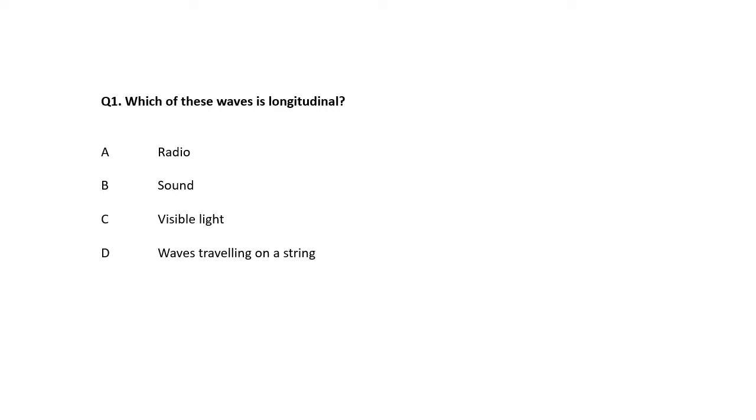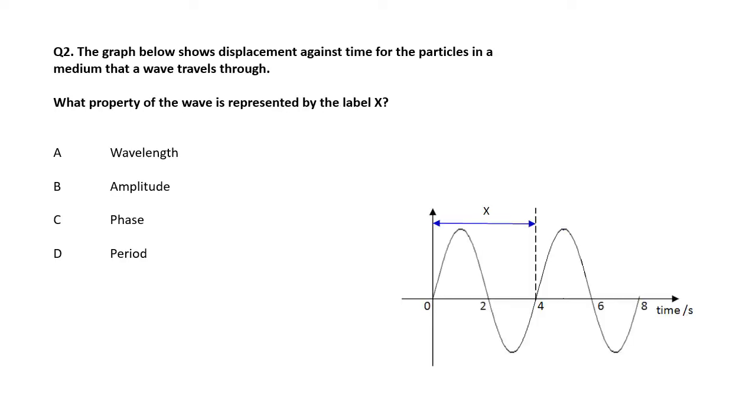Number one, the longitudinal wave is sound. The others are transverse. This one here, displacement against time. What property of the wave label X from there to there? If we look on this axis, that says time. So from there to there is the period, which is D.